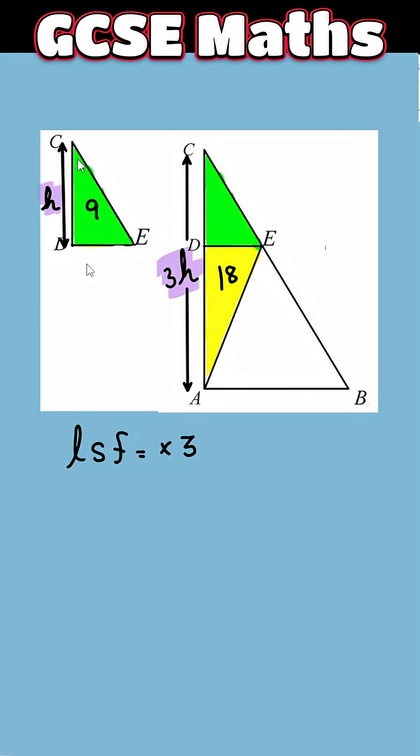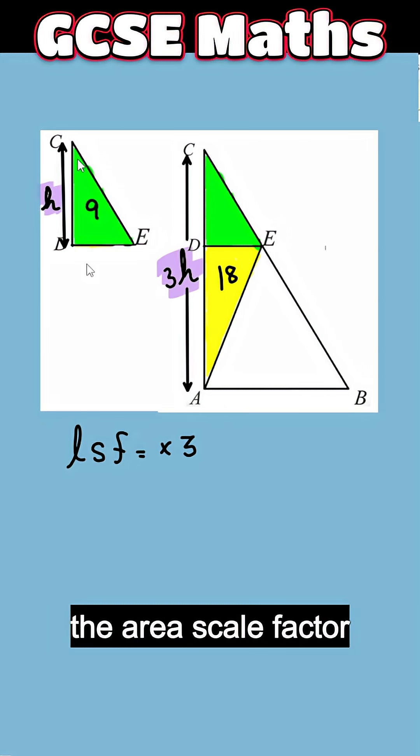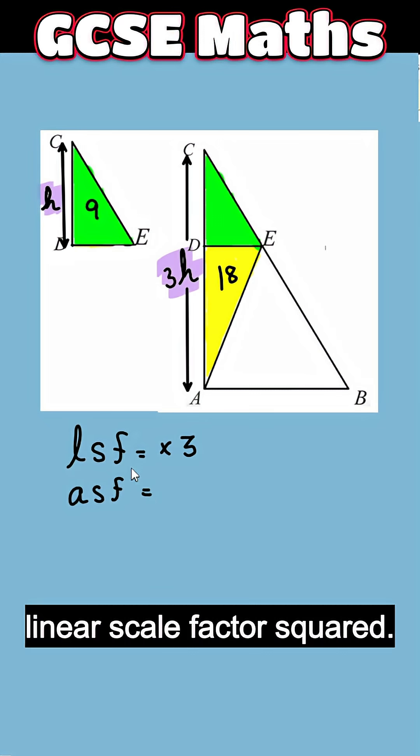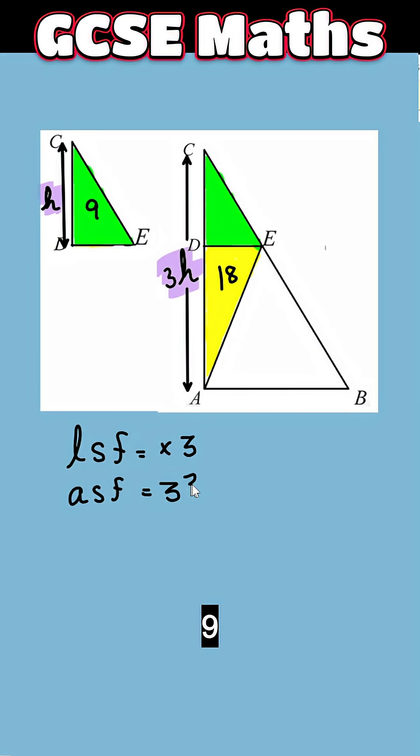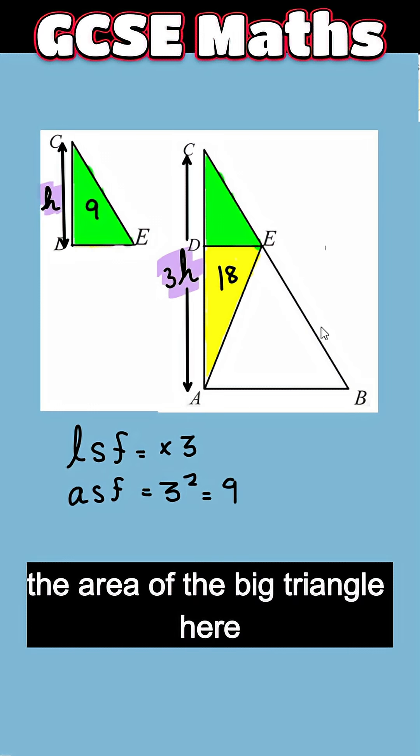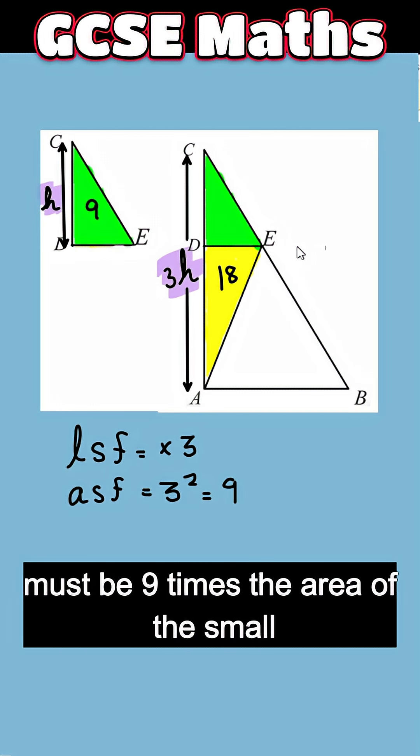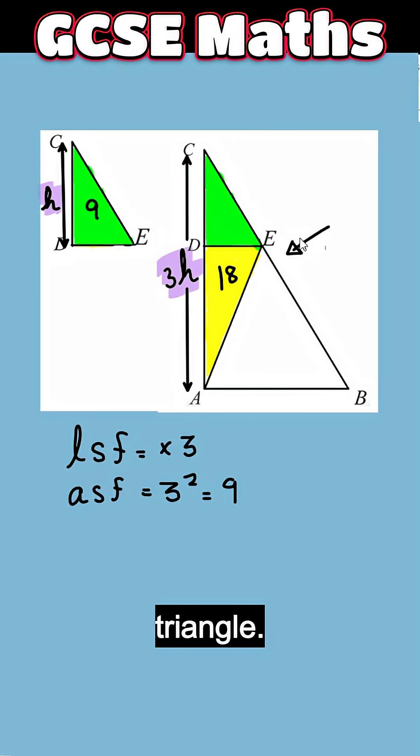Now, the area scale factor is linear scale factor squared. So that will be 3 squared which is 9. So we know the area of the big triangle here must be 9 times the area of the small triangle.